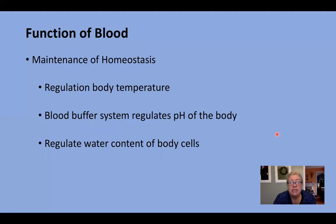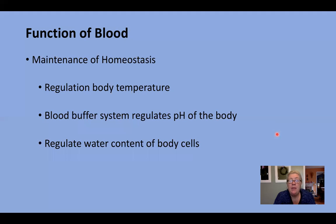Blood helps with the maintenance of homeostasis. It regulates body temperature — when you get really hot your skin becomes very red because blood travels to the surface of your skin so excess heat can be radiated off. The opposite happens when you get cold: your hands get very white because blood pulls toward the core of your body to keep your organs warm. You can live without a finger or toe, but not without your liver or heart, so it's important to keep those warm.